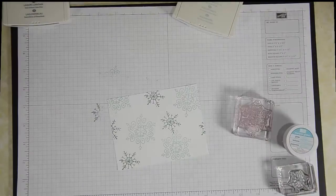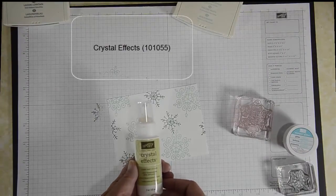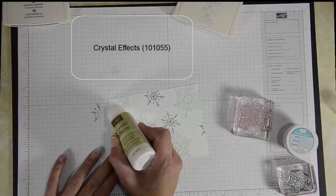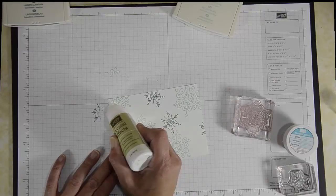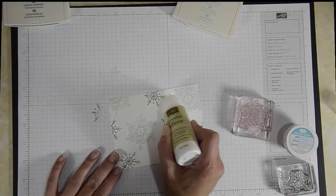Now I'm going to add an accent to my project using Crystal Effects. I'm just going to draw a horizontal line at the top of my project.